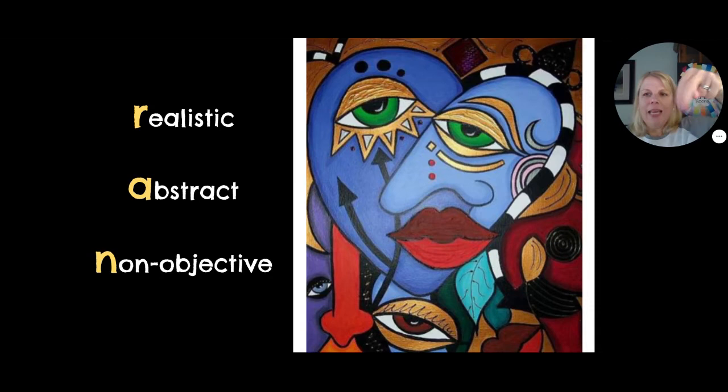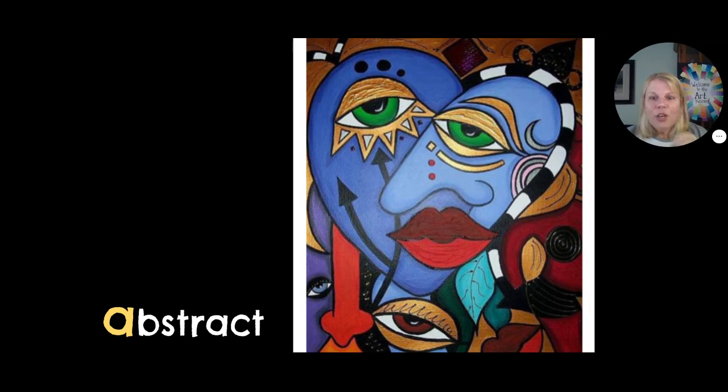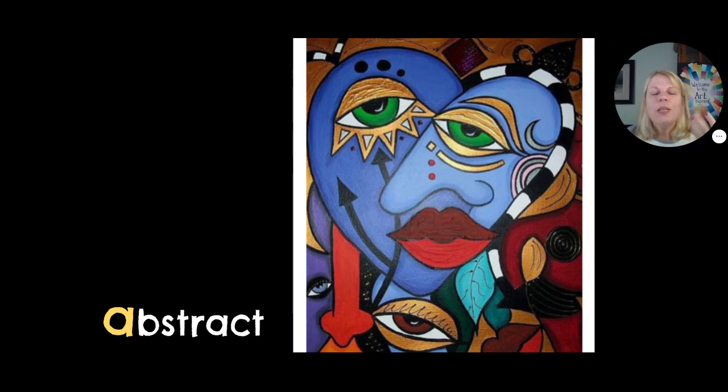R, A, N — which one do you think? Hold it up, keep those cameras on so I can see you. This one is abstract. You can tell it's a face — you can see facial features — but obviously it's not realistic. So we put this into the abstract category.